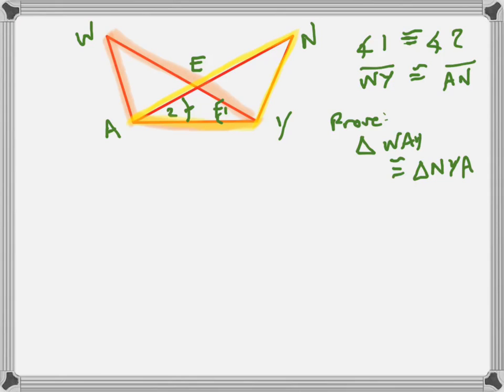And WY and AN are equal. WY, this huge one right here, so I'll put a tick mark there. WY and AN are equal. So I want to prove that those two highlighted triangles are equal.